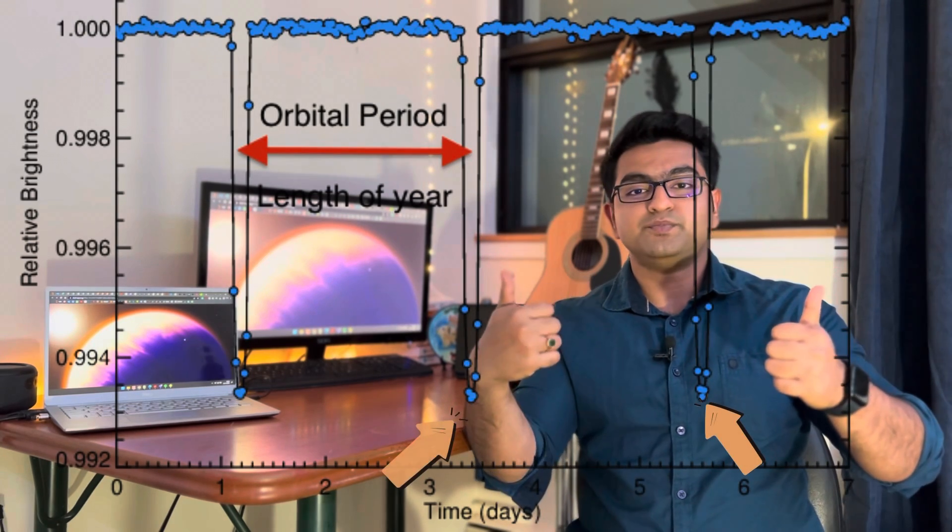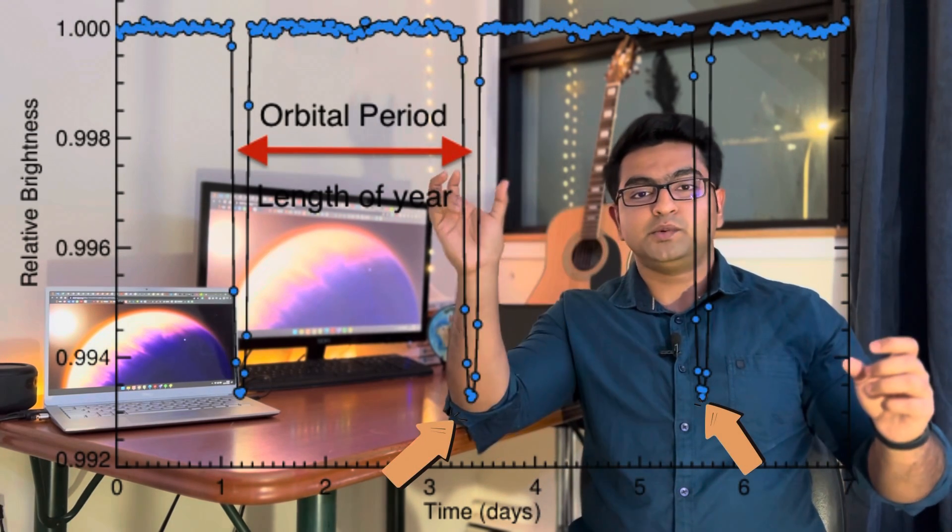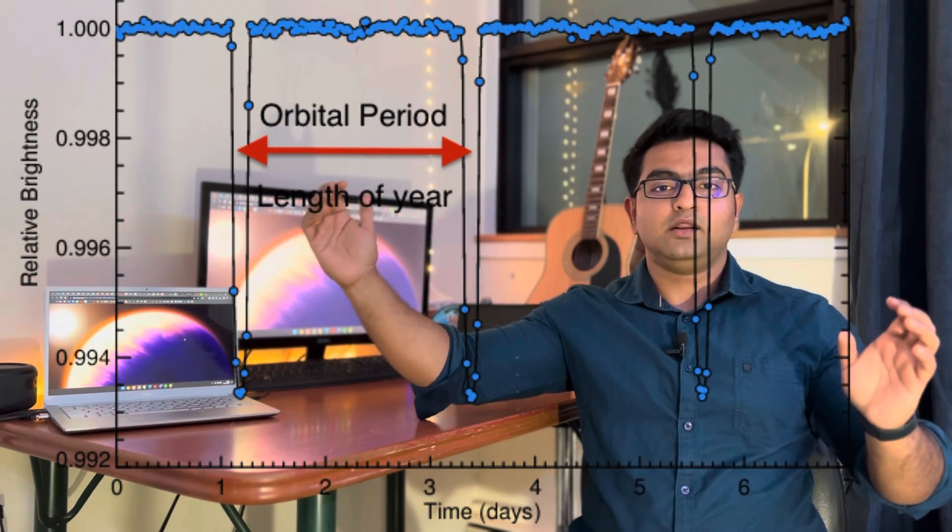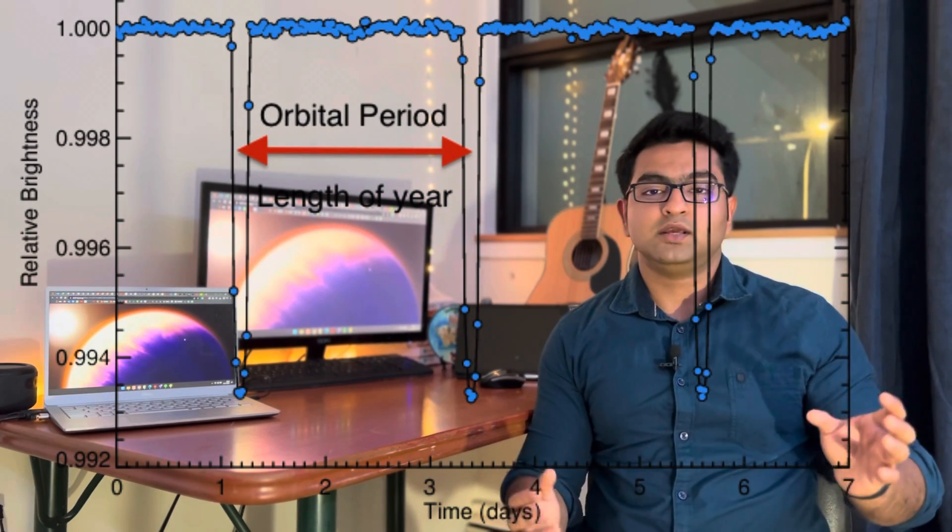If you look at this peak compared to this peak and see the time difference between them, you see that this repeats on and on. It has a fixed periodicity. From this periodicity you can estimate what is the radius of that planet around its star.